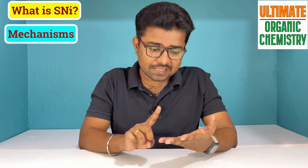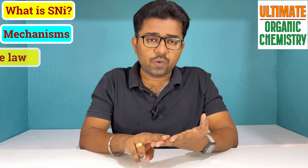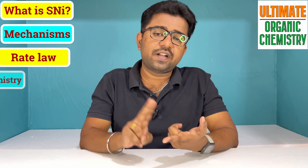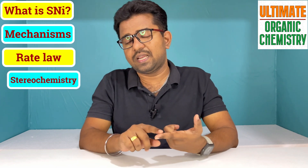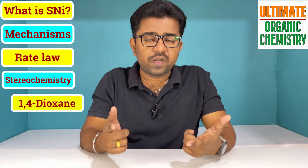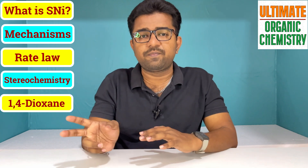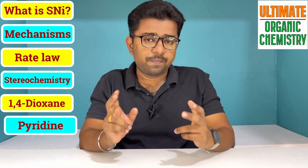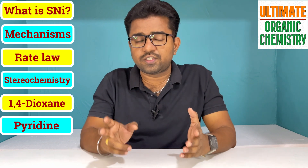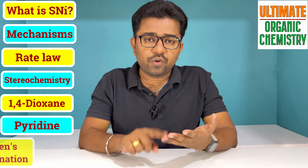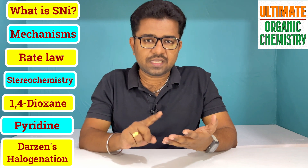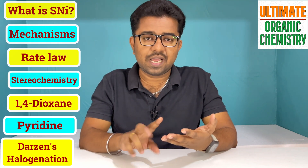The concepts I am going to cover in this video are: what is the SNI reaction? What are the mechanisms involved — there are two types. What is the rate of the SNI reaction? What is the effect of stereochemistry? What is the effect of solvent — specifically 1,4-dioxane and pyridine — on product stereochemistry? And I will also explain what is the Darzen's halogenation process.